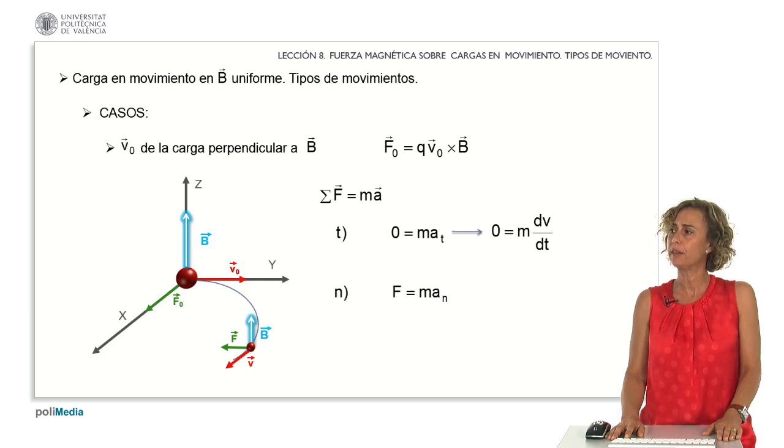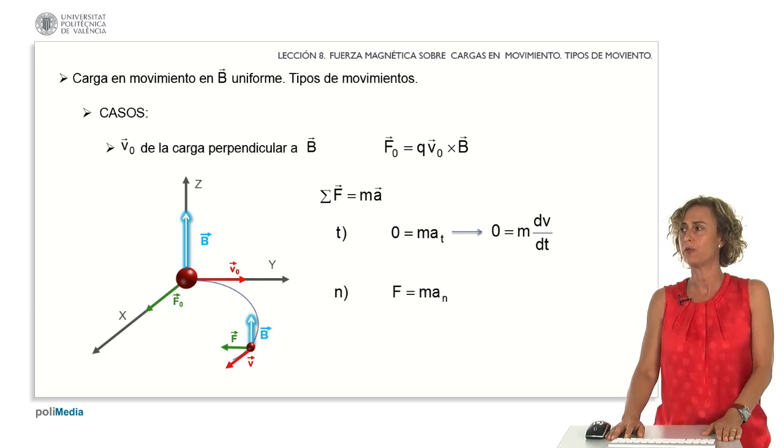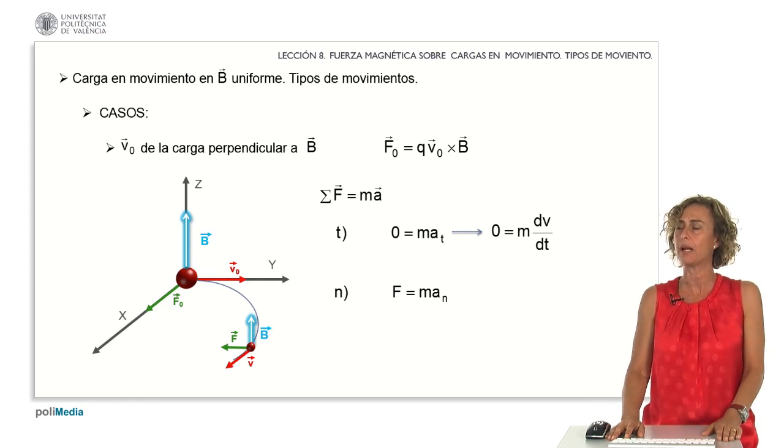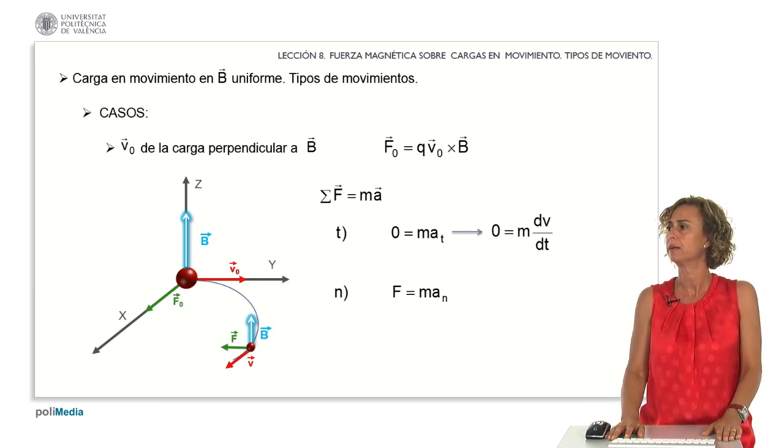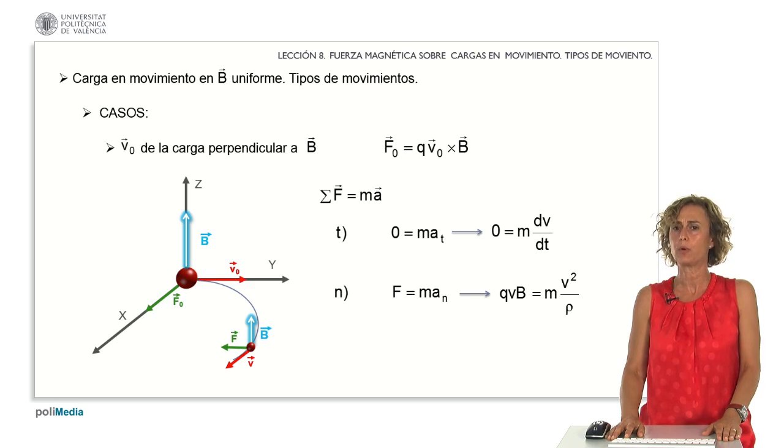In the perpendicular direction, we observe the force, which equates to the mass multiplied by the normal acceleration. The force, in magnitude, defined as the charge times velocity times the magnetic field vector, equals the mass multiplied by the normal acceleration, represented as v squared over rho, where rho stands for the radius of curvature, as we've discussed previously.